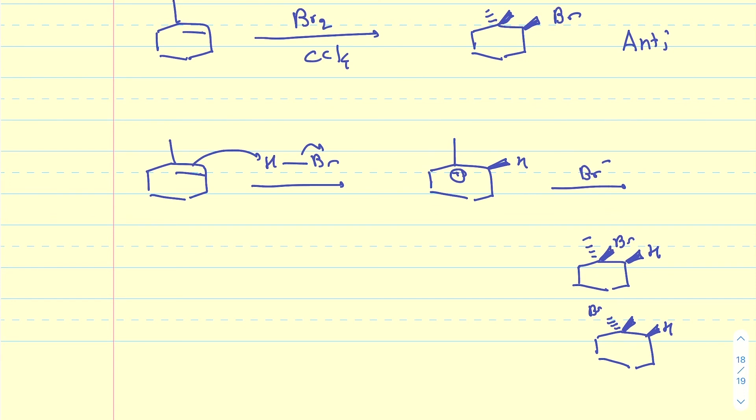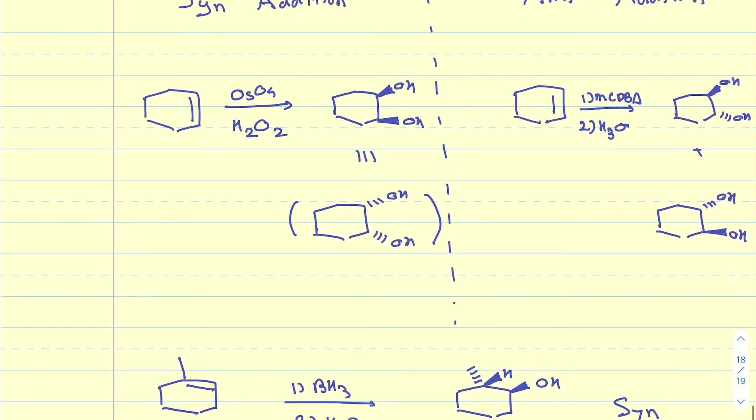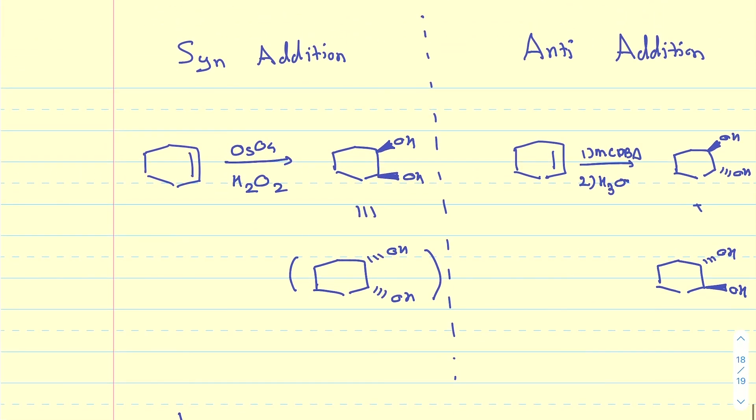So an addition reaction doesn't have to be an anti- or a syn-addition reaction, but if the stereochemistry is well-defined, and the two things that are being added are on the same side of the alkene, we call that syn-addition. If they're on opposite sides, we call that anti-addition.